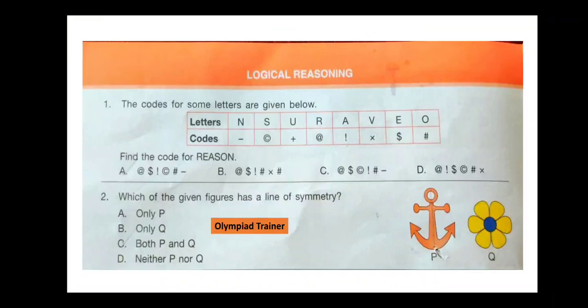Let's start with the first question of Logical Reasoning. The codes for some letters are given below. Find the code for REASON — R, E, A, S, O, N. Look at the options and select your answer. The correct answer is option A.